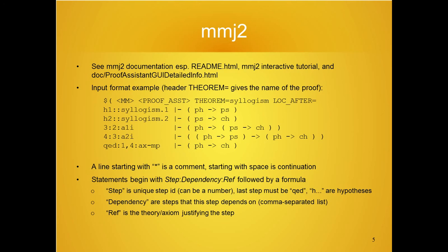Here is an example of its input format. The first line is a header that gives the name of the proof, and then a bunch of lines after that. A line beginning with a star is a comment; a line beginning with a space is a continuation. Statements begin with a step ID, colon, dependency list, colon, ref, followed by at least one space, and then a formula. The step is just a unique step ID — it can be a number, but it has to be unique. The last step has to be QED, and hypotheses have to begin with the letter H.